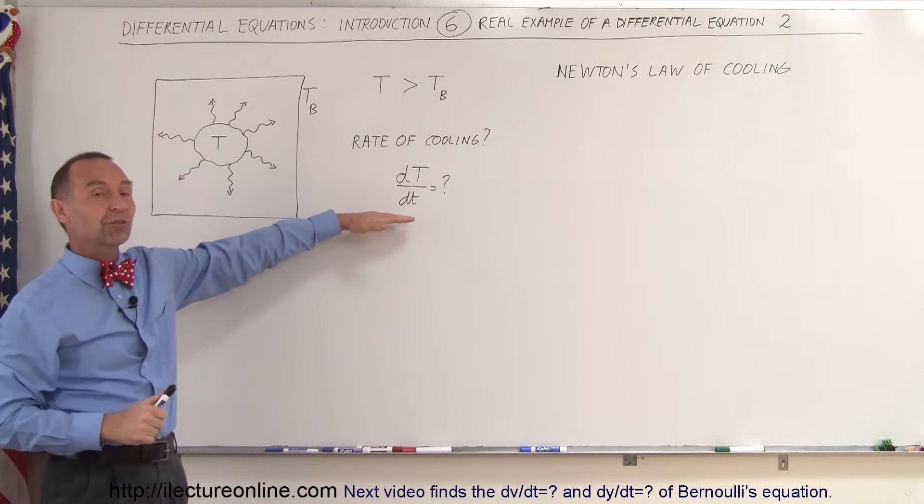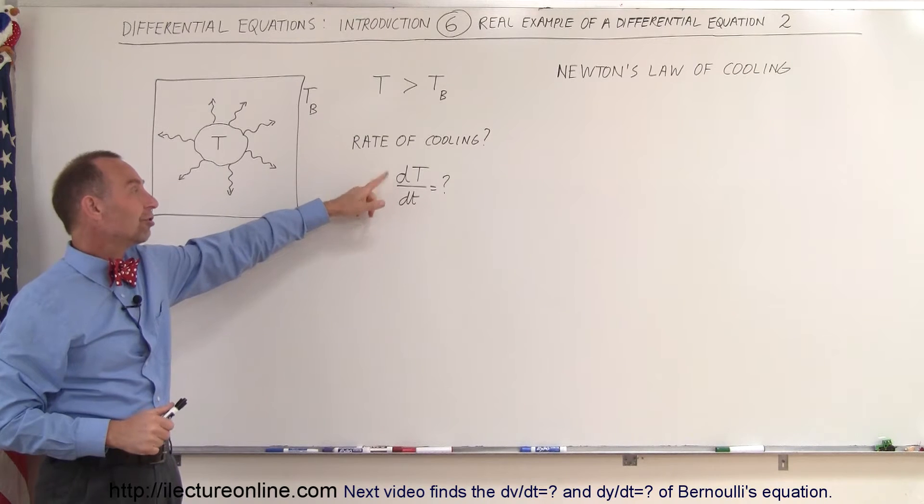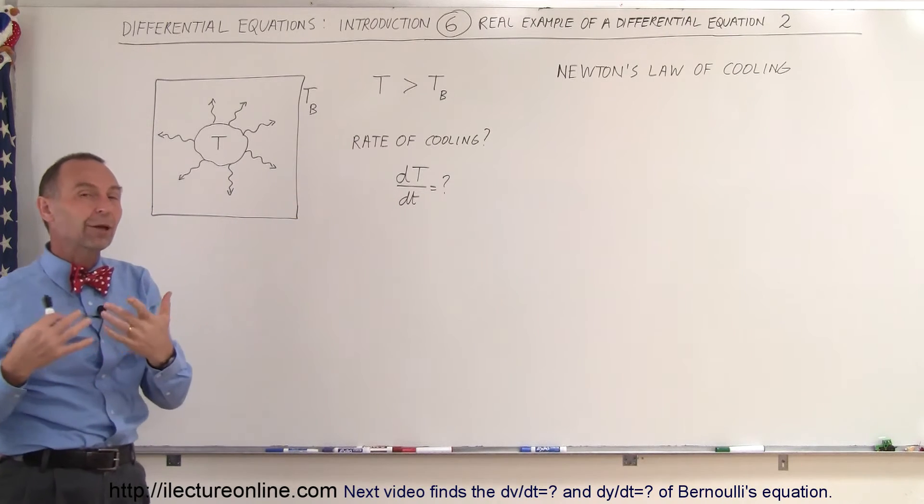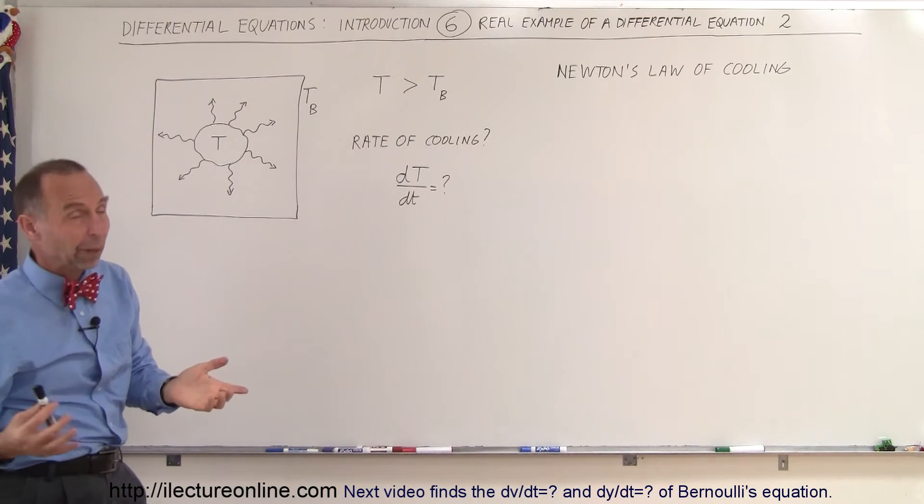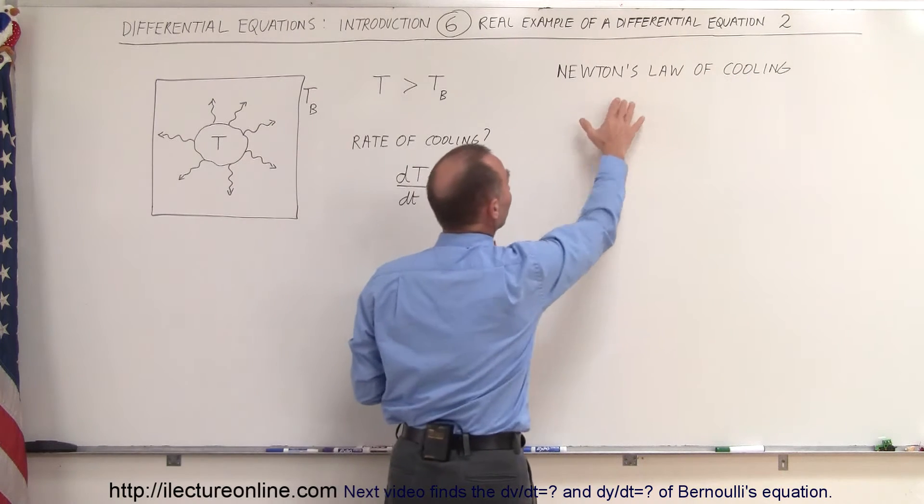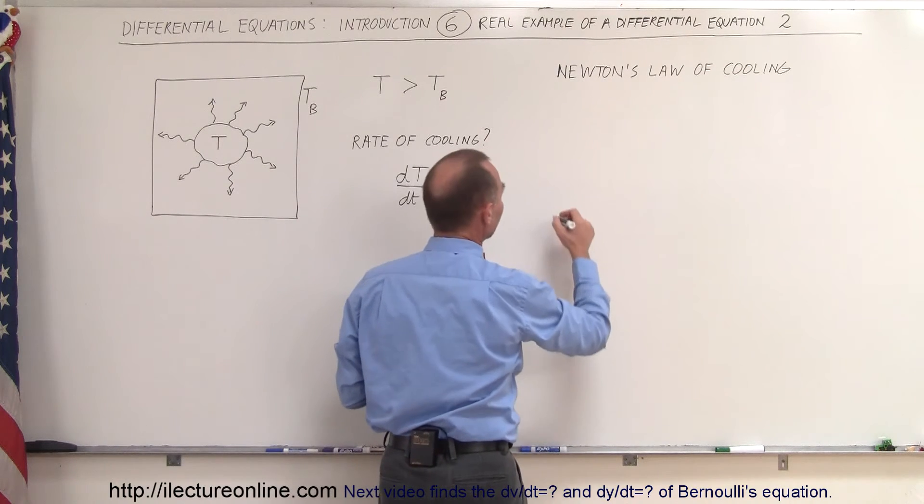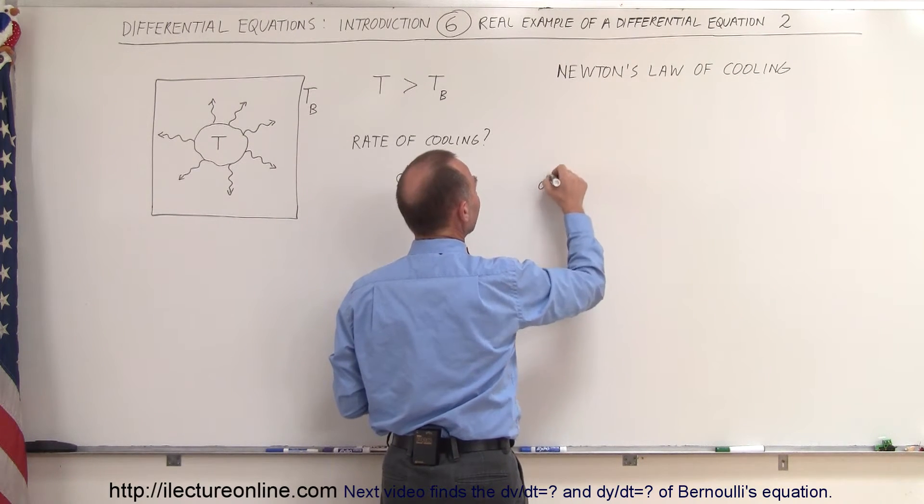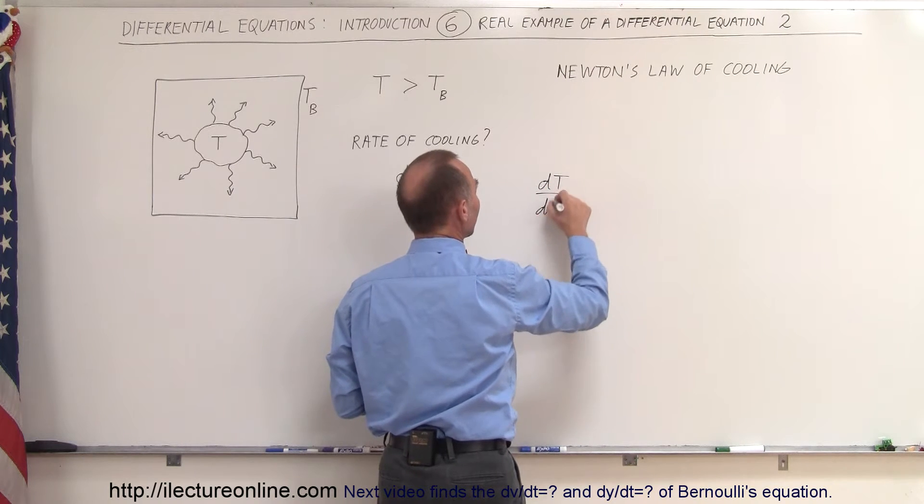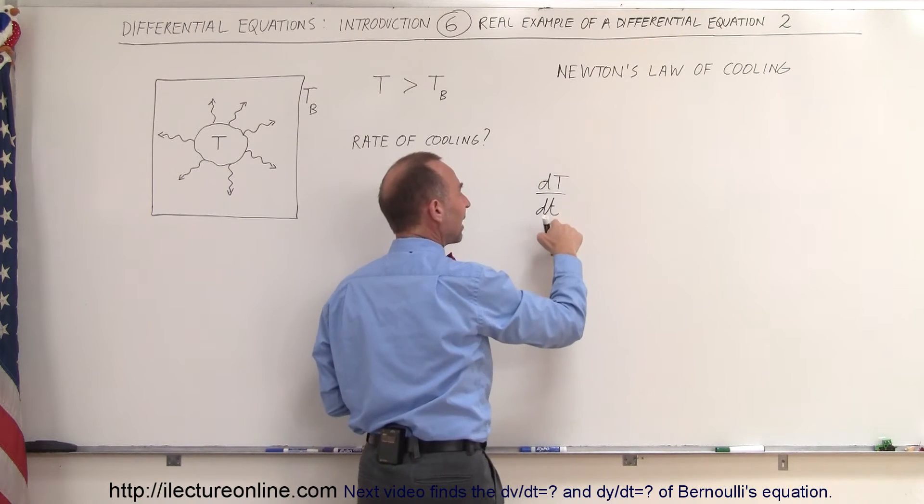And so if we come up with an expression for the change in the temperature with respect to time, we will end up with a differential equation. By the way, this is what we call Newton's law of cooling. And Newton had discovered that the rate of cooling, dT/dt, so the temperature is big T, time is small t,